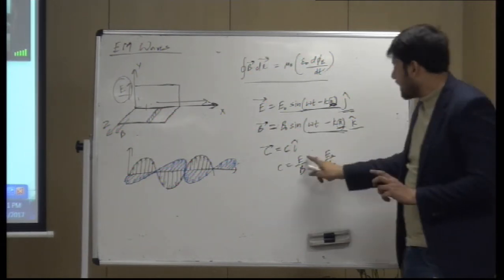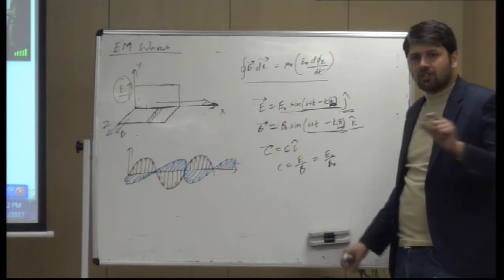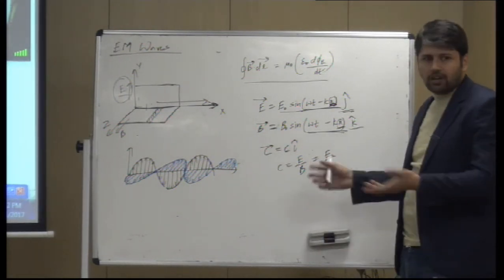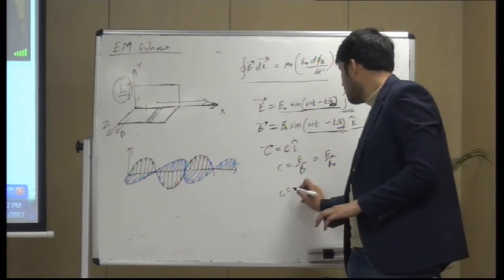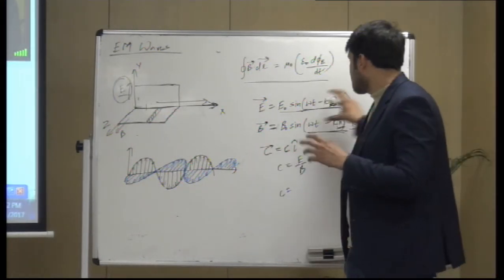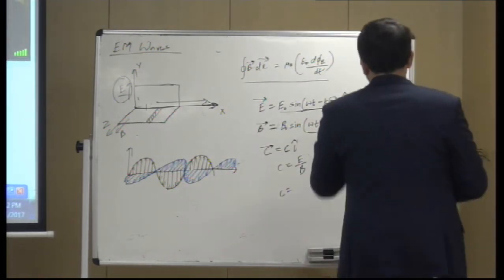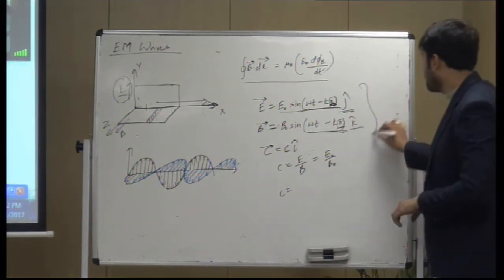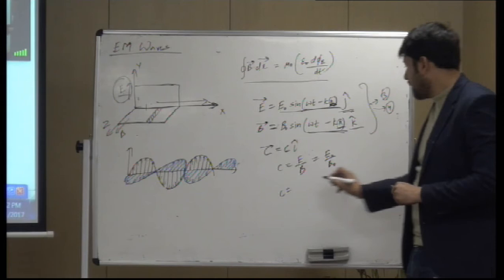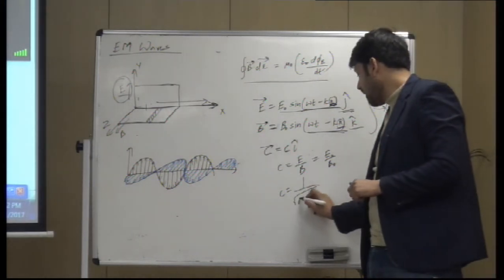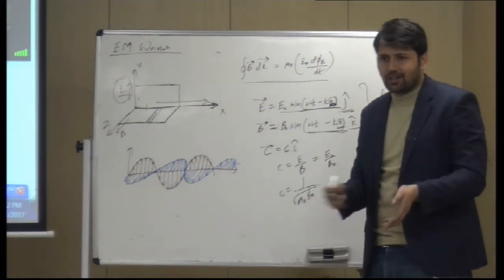At any time, if E is the electric field and B is the magnetic field, their ratio is always equal to C. It is also valid for peak values. Just using these two E and B expressions and putting them into Maxwell's third and fourth equations, you would be able to get this. I am not deriving it because it is not worth the effort.